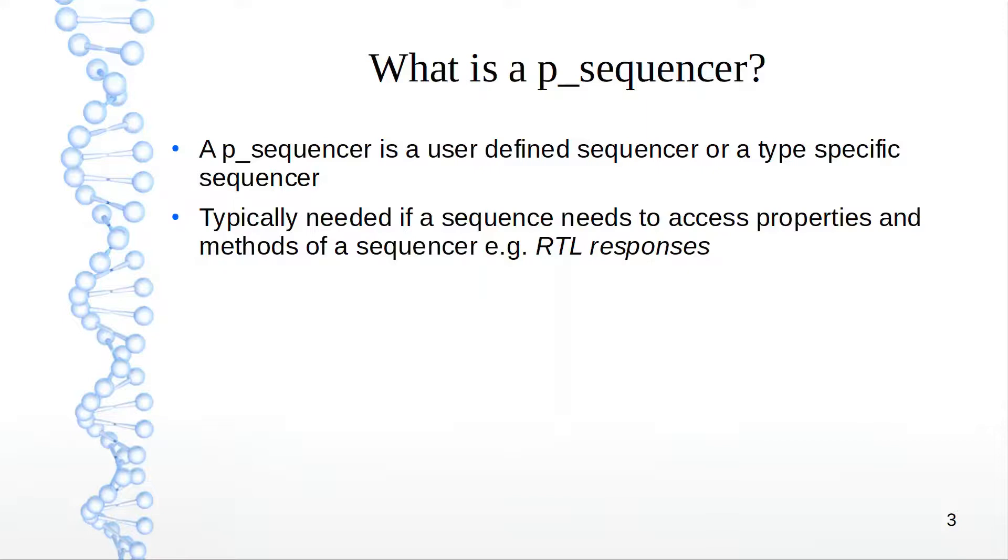A good example is when you're trying to get an RTL response back from the DUT to execute the next series of steps. You probably have a blocking call waiting for a response, and then the next steps are executed once you have it. For that purpose, a p_sequencer is required.